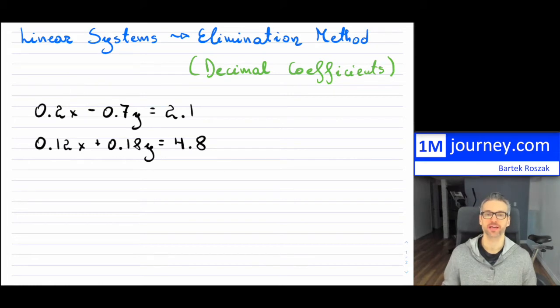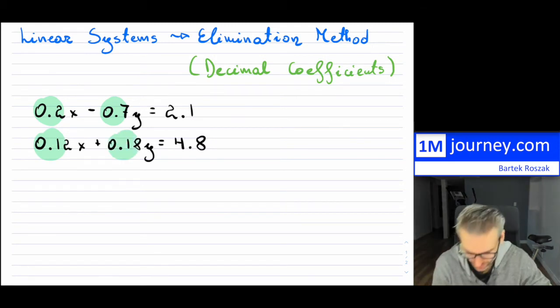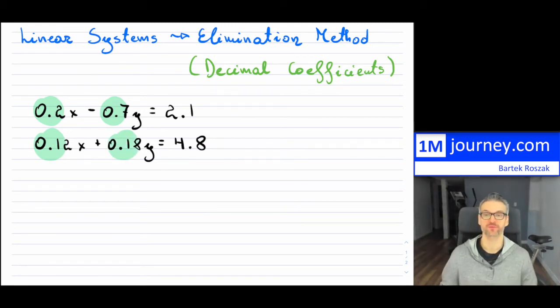So here, my decimals. So notice these are the coefficients. That's the coefficients that are in front of your variables. So I have two lines and now they're all decimals.